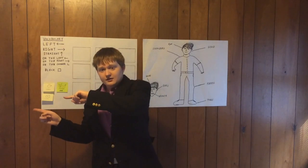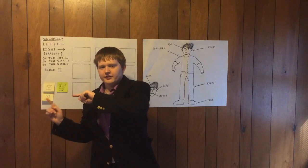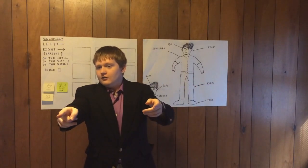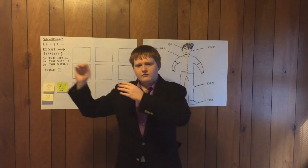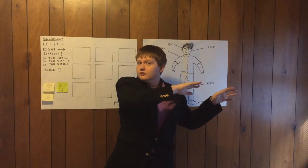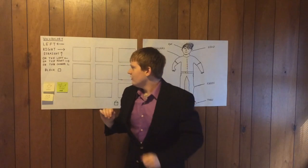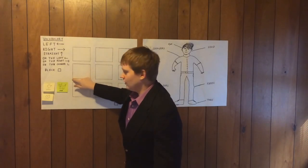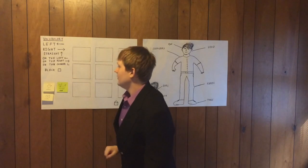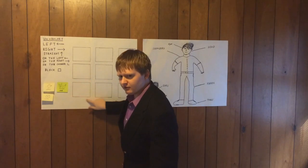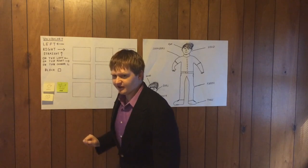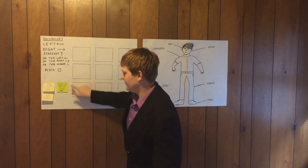Does anybody remember what way this is? Left. Very good. And this? Right. Very good. And this way. Straight. Very good. Now if I have something over here on the right. Very good. On the left. Very good. Now what if I have something right here? Right here. Huh? On the corner. Very good. On the corner. On the corner. Very good. Now what is this? Anybody remember? Block. Very good. Block. Very good. Now one more time. Block. Very good.